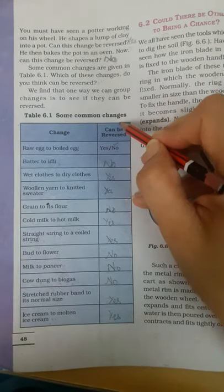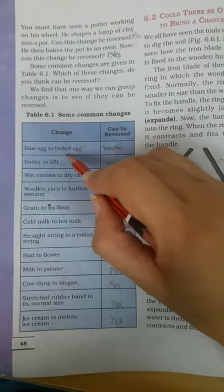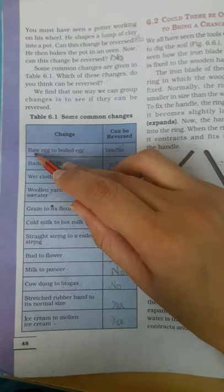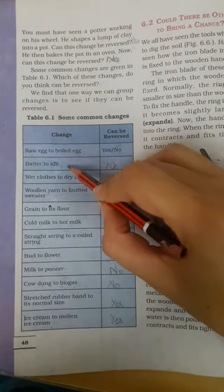Now some common examples given in Table 6.1. First one is raw egg to boiled egg - raw means kaccha to boiled egg. Can this change be reversed? No. Batter to idli?